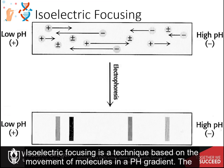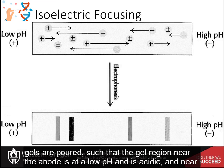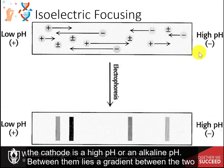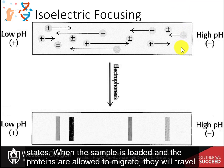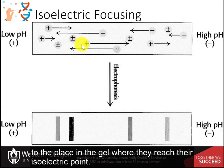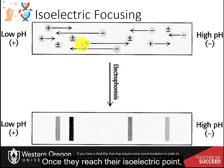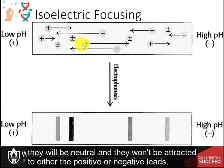Isoelectric focusing is a technique based on the movement of molecules in a pH gradient. The gels are poured such that the gel region near the anode is at a low, acidic pH, and near the cathode is at a high, alkaline pH, with a gradient between the two states. When the sample is loaded and the proteins are allowed to migrate, they will travel to the place in the gel where they reach their isoelectric point. Once they reach their isoelectric point, they will be neutral and won't be attracted to either the positive or negative leads.